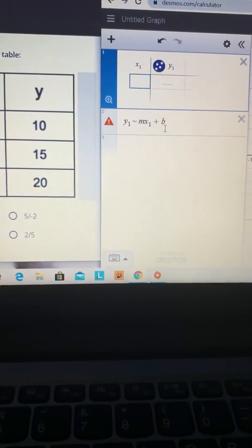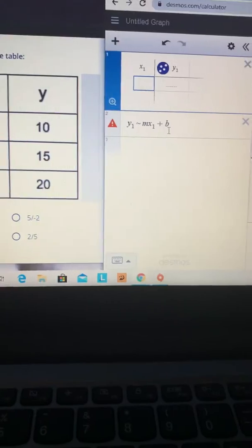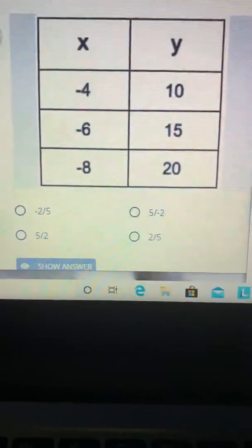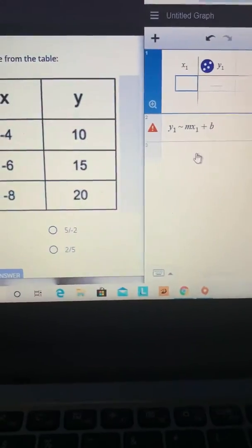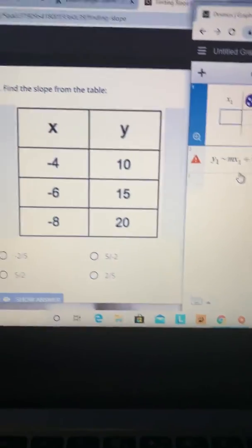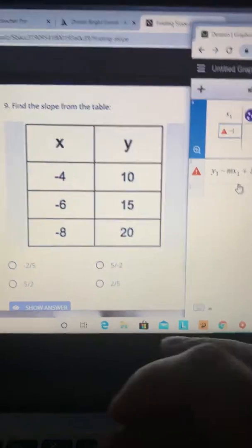Which is y1 equals mx1 plus b. Once you put your new numbers in from this table onto your table in Desmos, the answer will magically appear. So let's look at this magic.